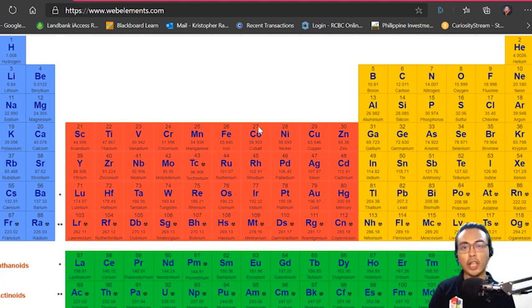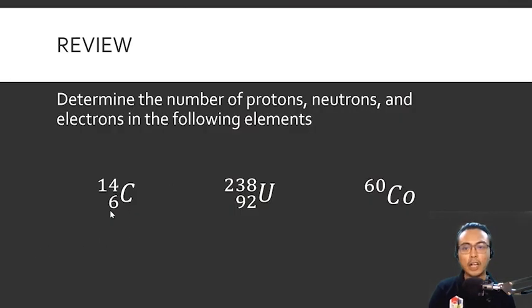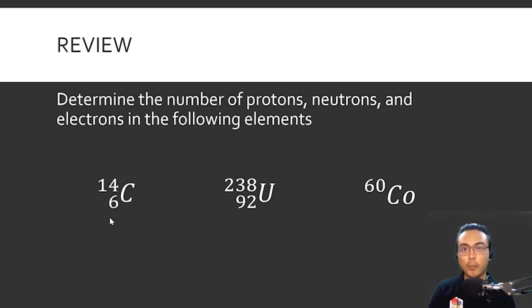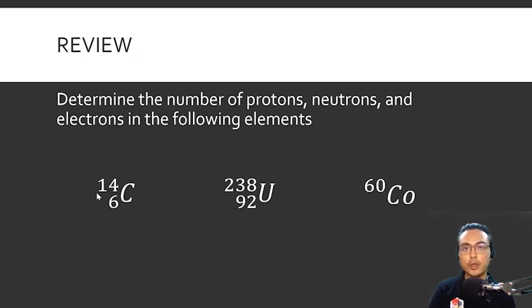The number at the top represents the mass number, and the mass number is the sum of the number of protons and neutrons in a specific atom. For carbon-14, the atomic number is 6, meaning it has 6 protons, and the mass number is 14, meaning it has 6 protons and 8 neutrons — because 14 minus 6 equals 8.